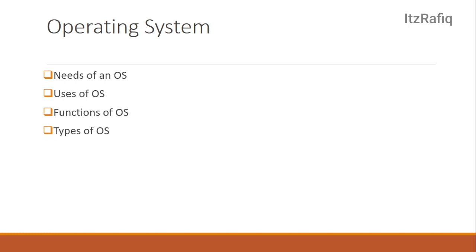Types of operating system: batch processing, distributed, single-user, multi-user, time-sharing, network OS — you can write all of these. For common operating systems, mainly see Windows, Linux, and Android from the book. Also see the latest versions: Windows 11 is the latest version of Windows, and Android 11 is the latest version of Android.